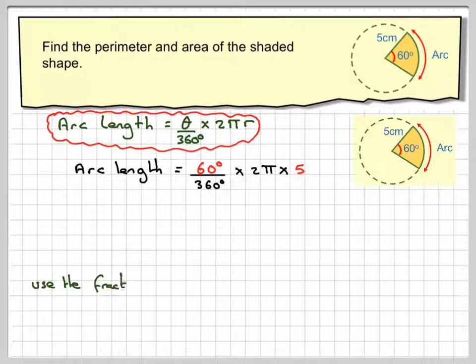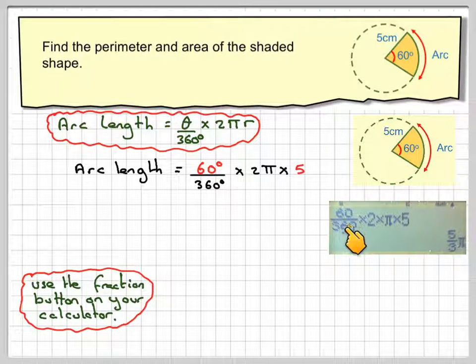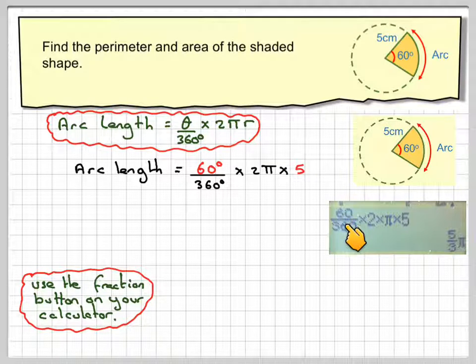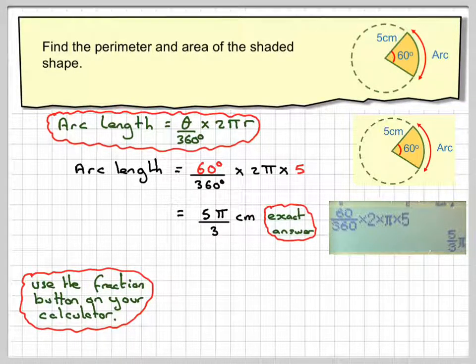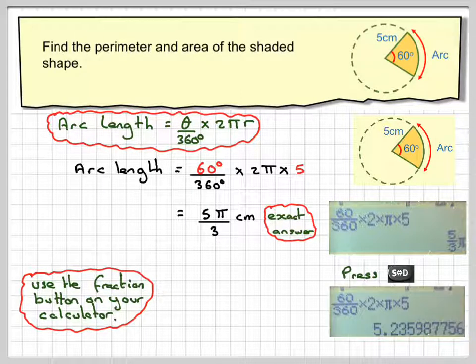So just make sure you use the fraction button on your calculator. So 60 over 360 times 2 pi times 5, which gives an exact answer of 5 pi over 3. If you want the decimal equivalent, you just press the S to D button on your calculator, and then you'll get 5.235.